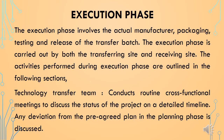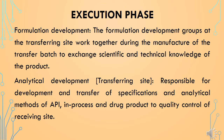The second basic element is the execution phase, which involves the actual manufacturing, packaging, testing, and release of the transfer batch, carried out by both the transferring and receiving sites. The technology transfer team conducts routine cross-functional meetings to discuss project status and timelines, and discusses any deviation from the pre-agreed plan. The formulation development group at the receiving site works together during manufacture of the transfer batch to exchange scientific and technical knowledge of the product.